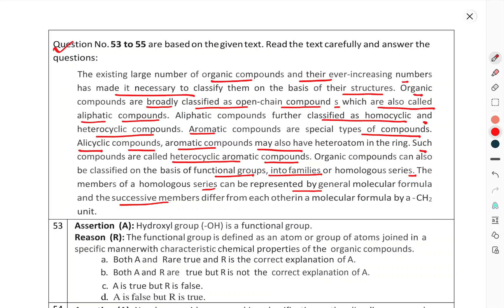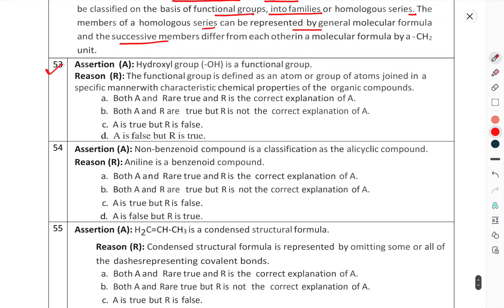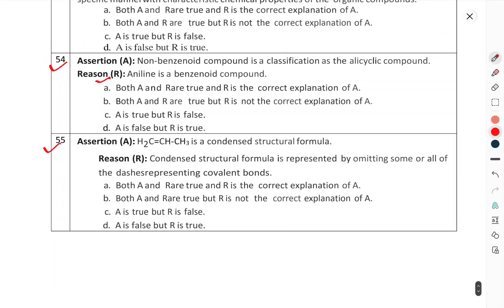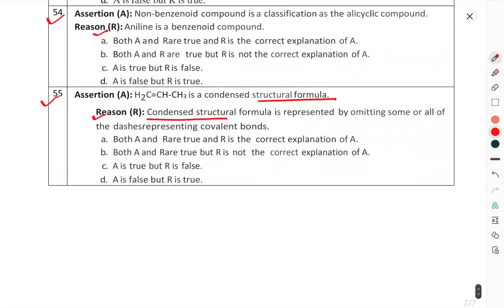Question number 53, assertion-reason based: Assertion - The hydroxyl group (OH) is a functional group. Reason - The functional group is defined as an atom or group of atoms joined in a specific manner with characteristic chemical properties of the organic compound. Question number 54: Assertion - Non-benzenoid compound is classified as an alicyclic compound. Reason - Aniline is a benzenoid compound. Question number 55: Assertion - H2C=CH-CH3 is a condensed structural formula. Reason - The condensed structural formula is represented by omitting some or all of the dashes representing covalent bonds.